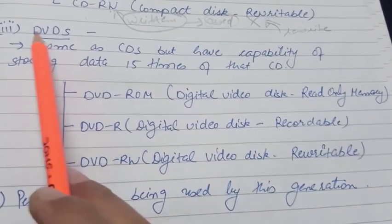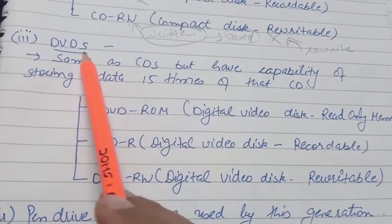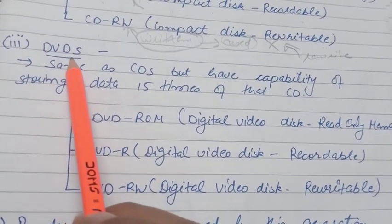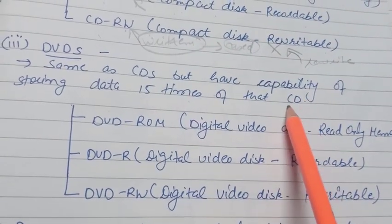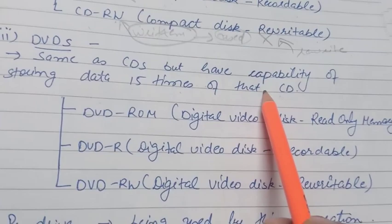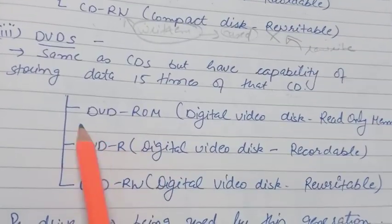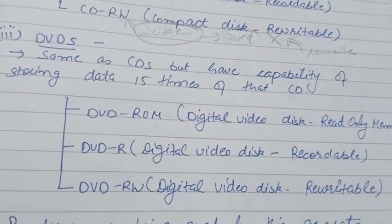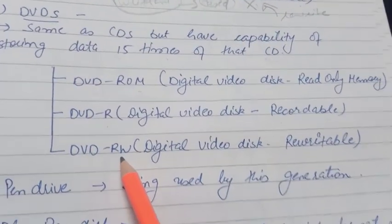Next we have the DVD, that is digital video disk. The main difference between a CD and a DVD is that a DVD can store 15 times more data than a CD — it has 15 times more storage capacity in comparison to the CD. Here also we have three particular types: DVD-ROM, same as that of CD-ROM; DVD-R, same as that of CD-R; and DVD rewritable, again same as that of CD-RW.